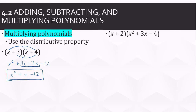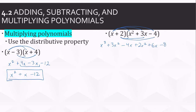Let's try one that's a little longer — still done the same way. So I'll have x times x squared, x times 3x, x times negative 4, then 2 times x squared, 2 times 3x, and 2 times negative 4. Now we combine like terms: there's just the 1x cubed, but 3 and 2 make 5x squared. Negative 4x plus 6x is 2x, and then negative 8 is the only constant.